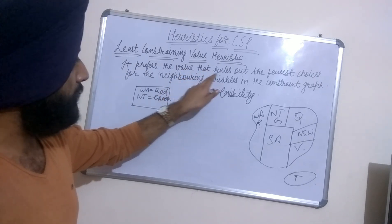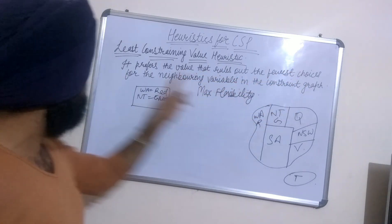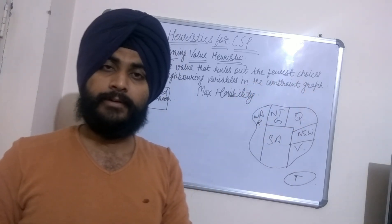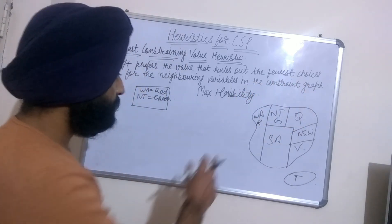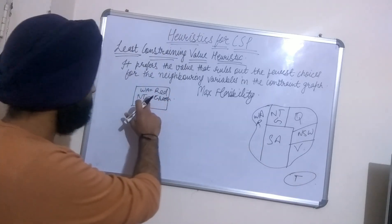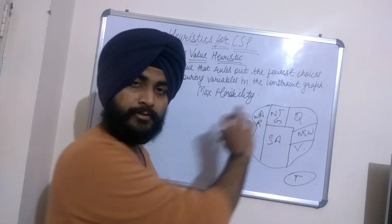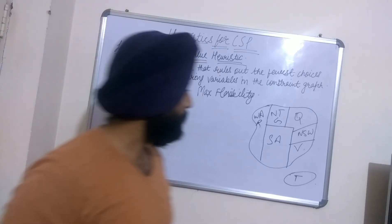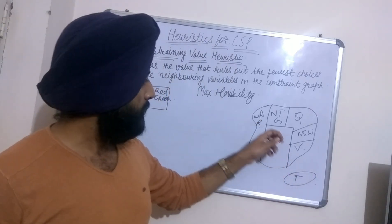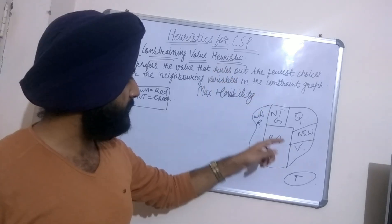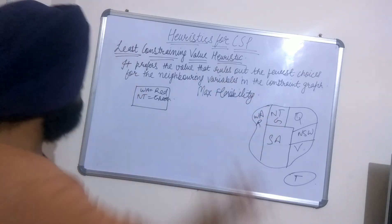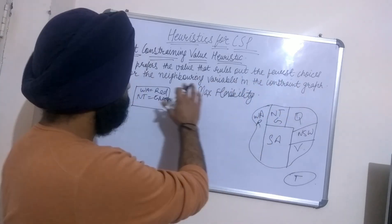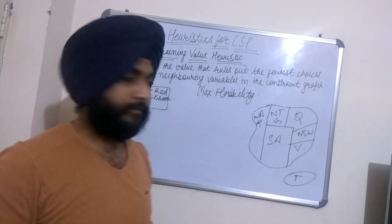The least constraining value heuristic basically prefers the value that rules out the fewest choices for the neighboring variables in the constraint graph. Suppose Western Australia is given red and Northern Territory is given green — the example we have been using from previous videos, we will use that here too.